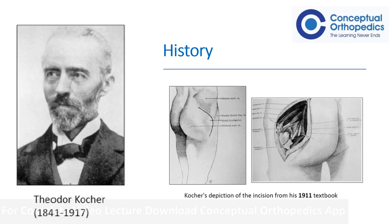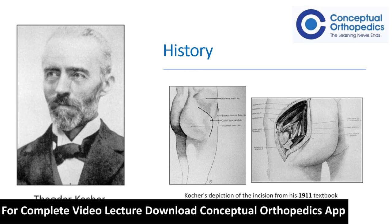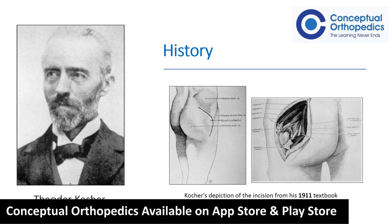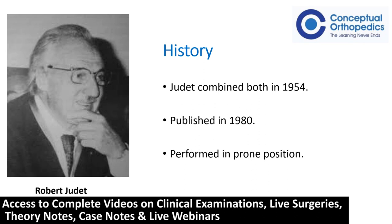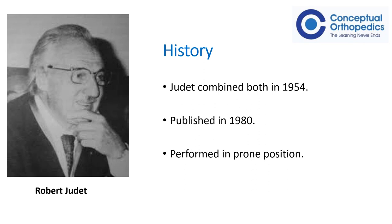Then in 1911, Kocher published his work of surgical exposure to the posterior hip using a curvilinear incision. He was not aware of the work of Langenbeck. Robert Judet from France combined both these incisions — the proximal part from Langenbeck's incision and the distal part from Kocher's incision — and described the approach. He named it after Kocher and Langenbeck and did not give the credit to himself.